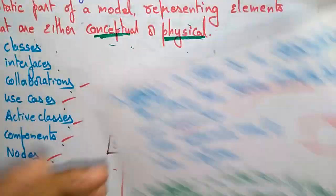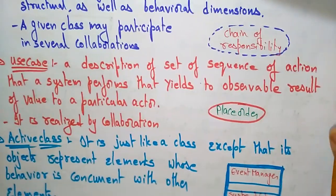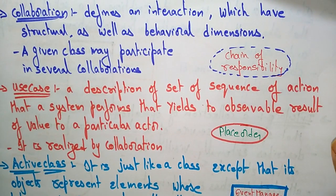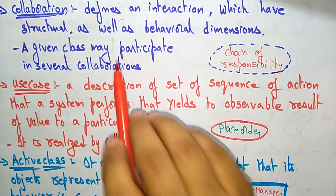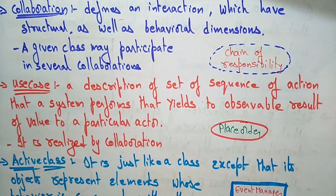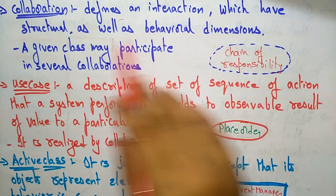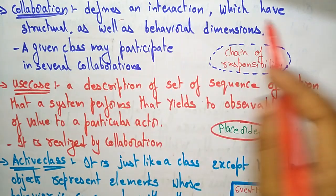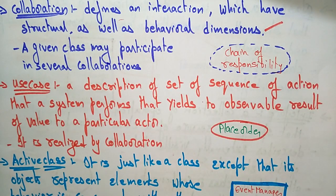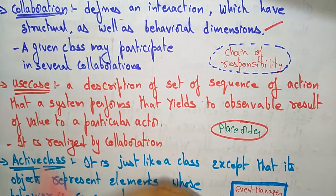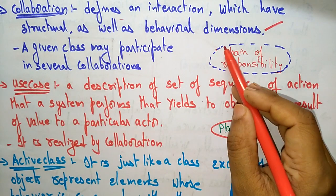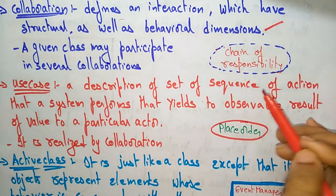The next structural thing is collaboration. A collaboration defines an interaction, which has structural as well as behavioral dimensions. Even though it is a structural thing, it can also provide some behavioral dimensions. A given class may participate in several collaborations, and collaborations are represented as a dotted oval shape.